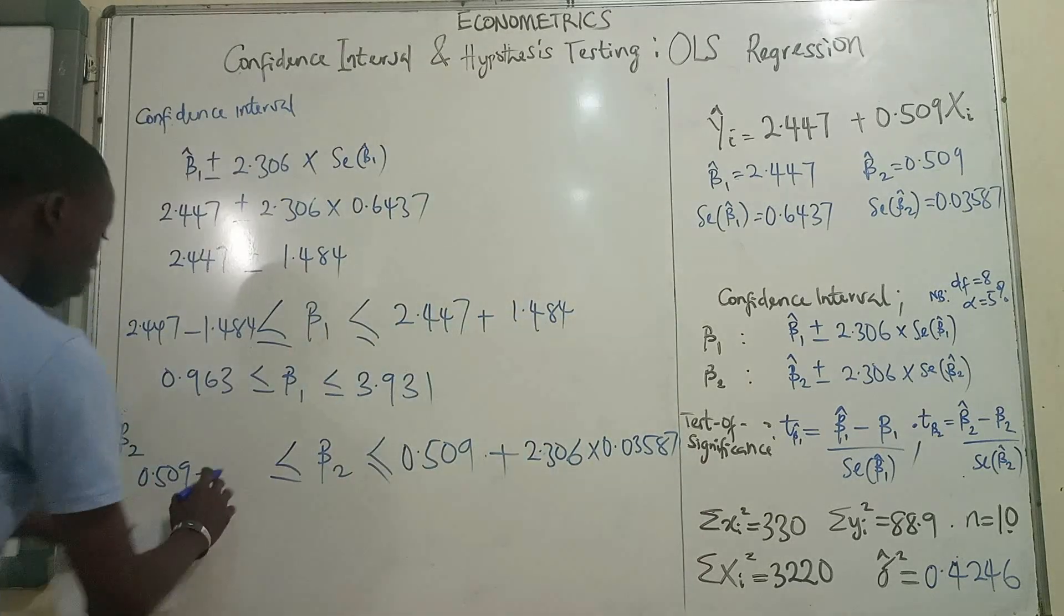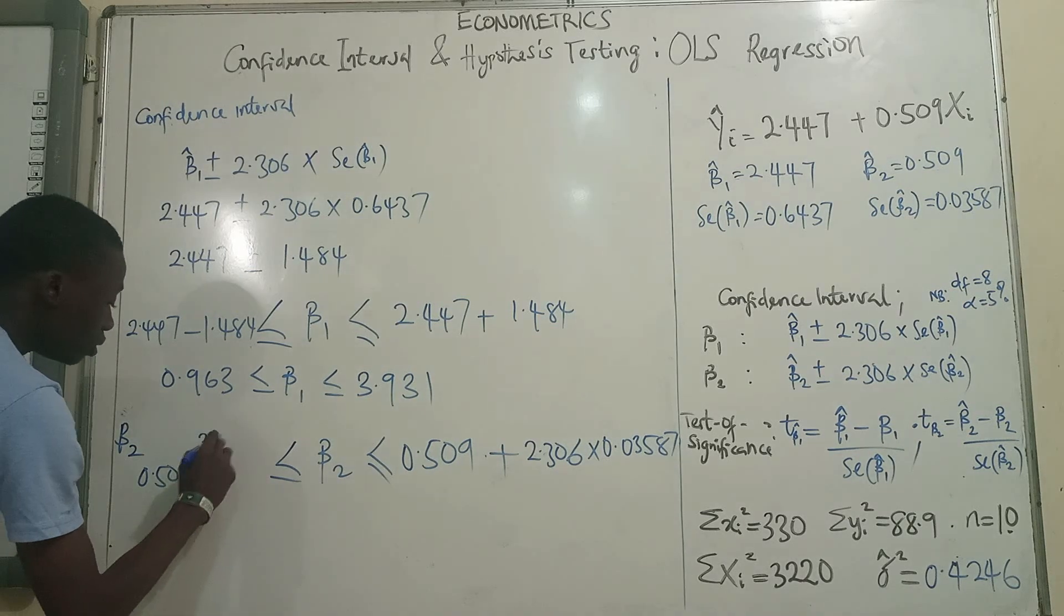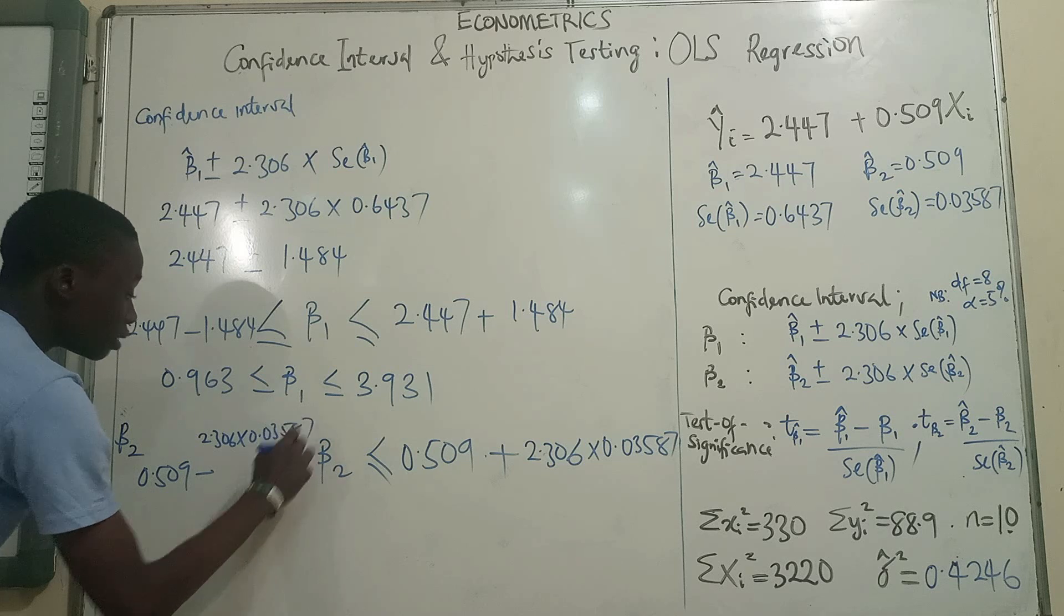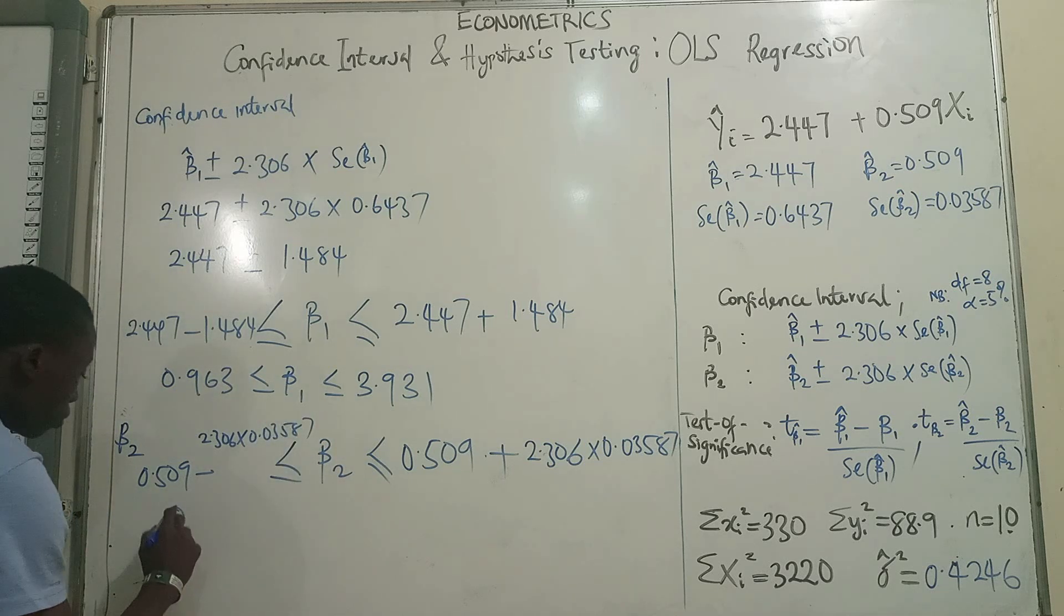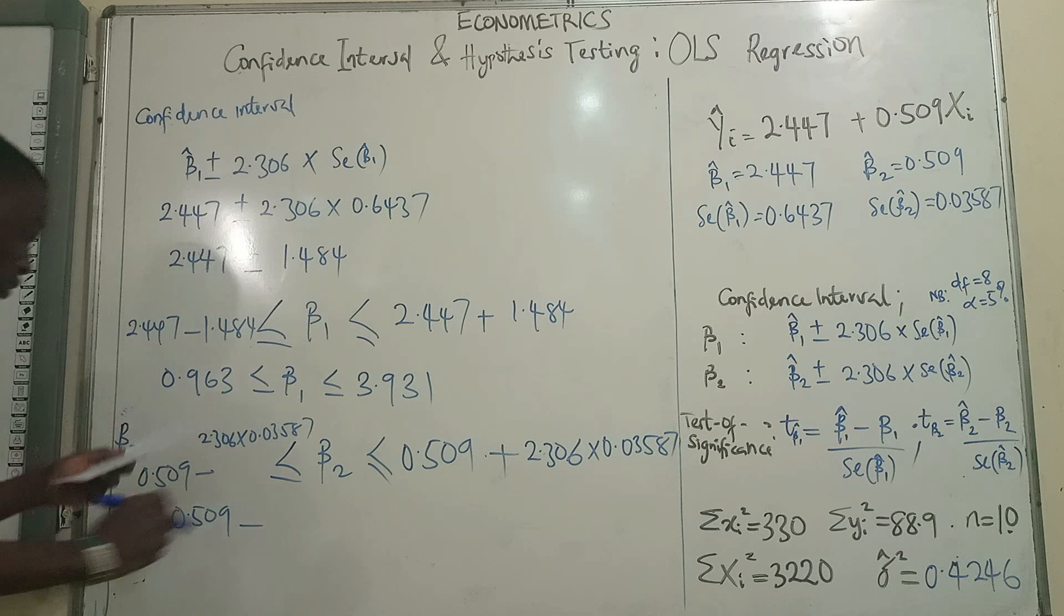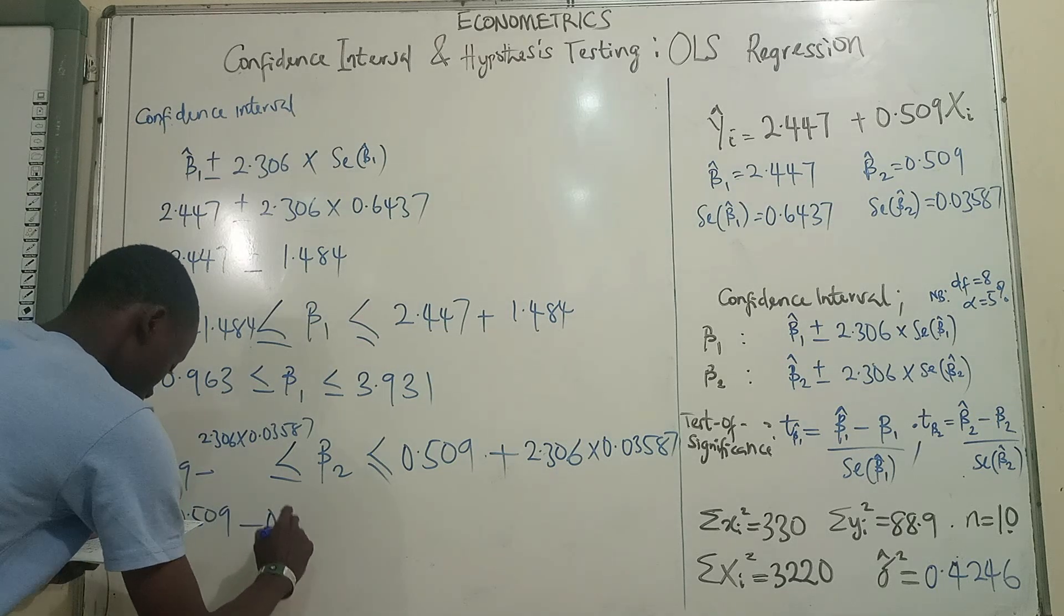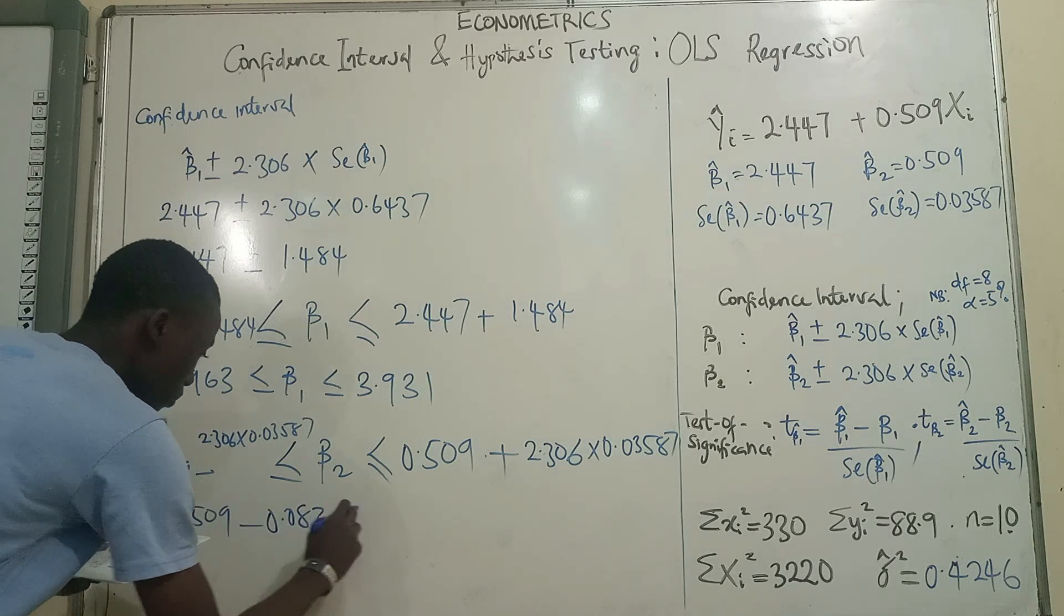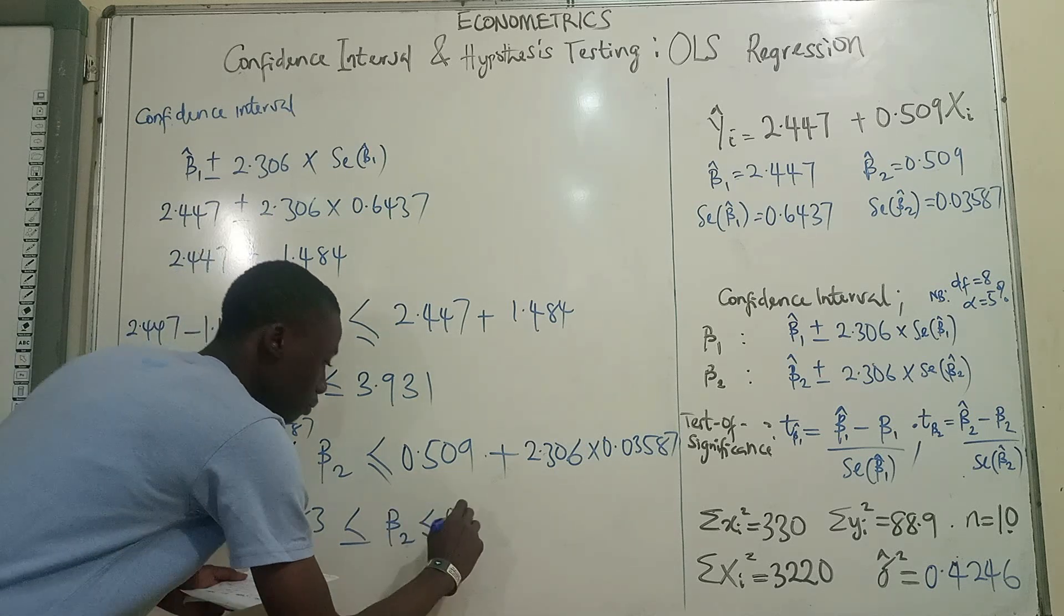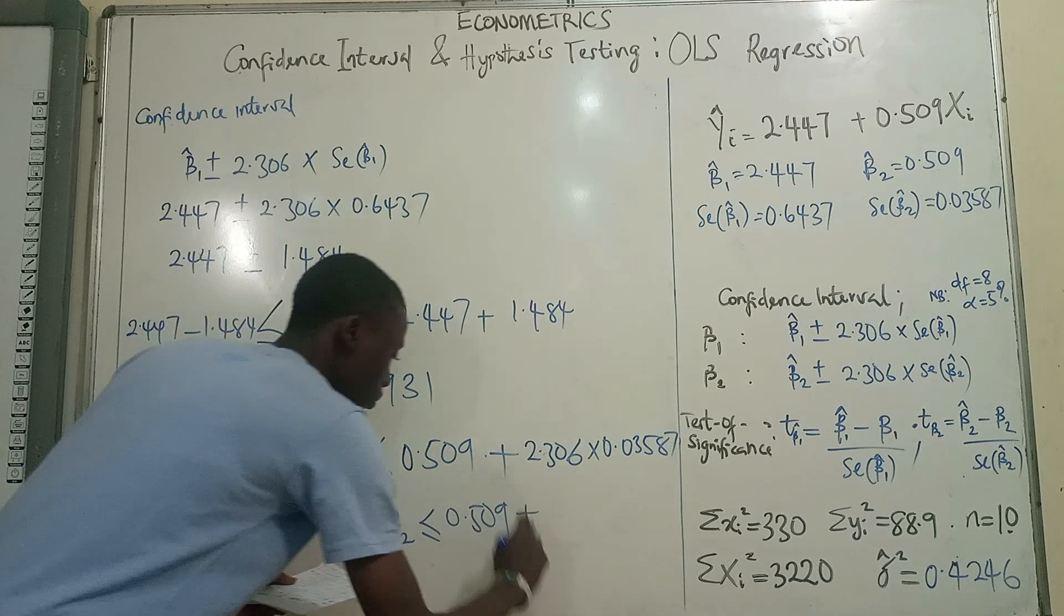Same way, so I'm going to subtract 2.306 times 0.03587. So 0.509 minus 2.306 times 0.03587.